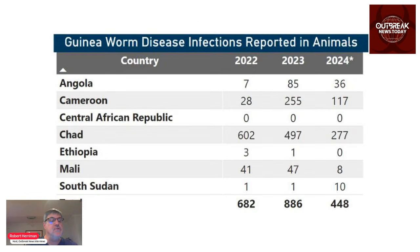Other great news is the number of guinea worm infections in animals has nearly halved, with 886 cases reported in 2023, and 448 cases reported year-to-date in 2024, provisionally.